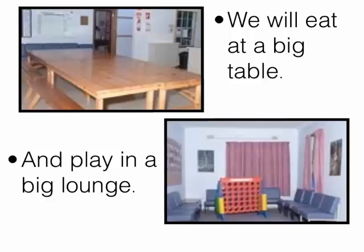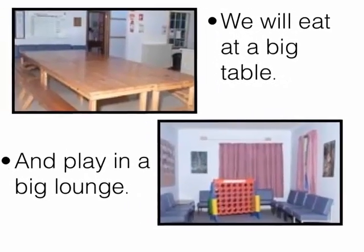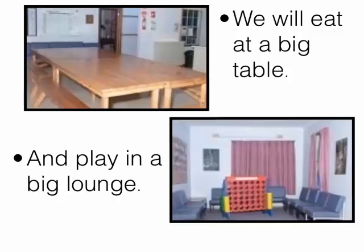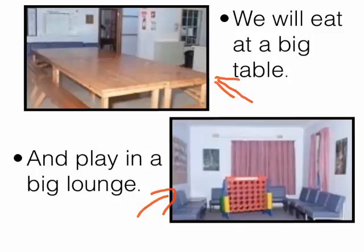It's really important to show some of the environment. Here I've shown the kitchen table and also where they might play in a lounge area and what that might look like. This will help them to familiarise themselves ahead of time, so when they actually go to the camp they'll walk into these spaces and see the table, the chairs, and that play game that is familiar to them, so they won't feel so disorientated.